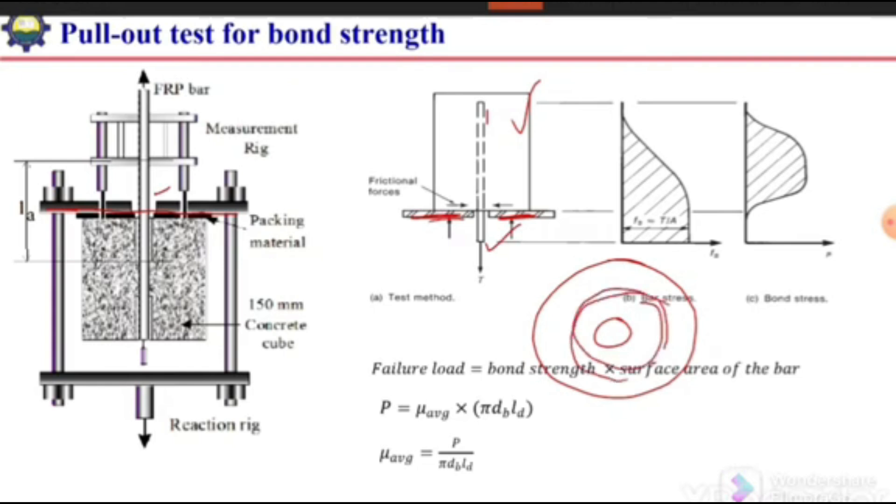This plate acts as a reaction frame, and then we pull this bar by applying a force with the help of the machine. The force at which this bar is pulled out is termed as T. It is the maximum load at which this bar is being pulled out of this concrete block.